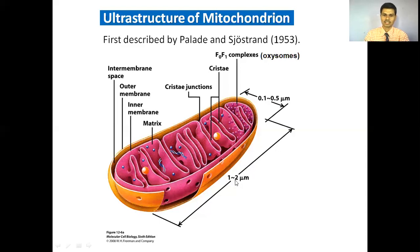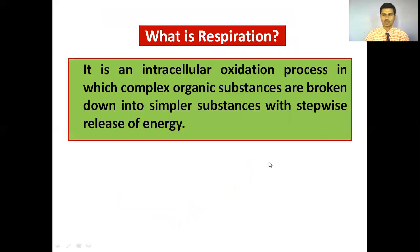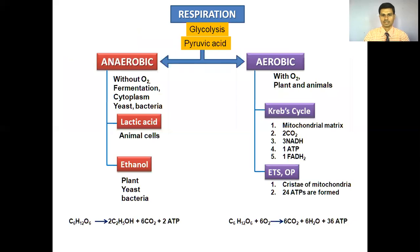The breadth of the mitochondrion is 0.1 to 0.5 micrometers; its length is 1 to 2 micrometers. Respiration is an intracellular oxidation process in which complex organic substances are broken down into simpler substances with stepwise release of energy. There are two types of respiration: anaerobic respiration and aerobic respiration.